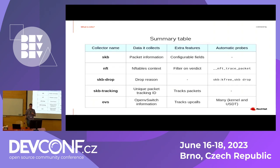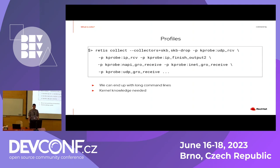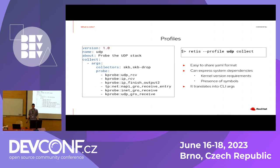As we start adding probes — since many of them are explicit — we end up with very long command lines and need kernel knowledge to know what to probe. This might be obvious for a kernel networking engineer but not for everyone else. So we developed something called profiles: a YAML file where we list the probes, enable collectors, easy to share, easy to ship in distro packages, easy to write for specific use cases. You just enable the profile and that's it.